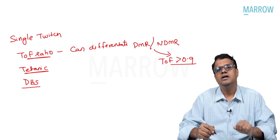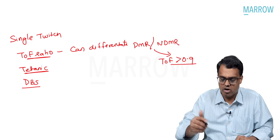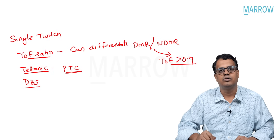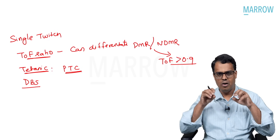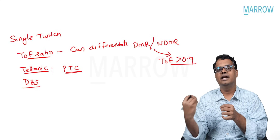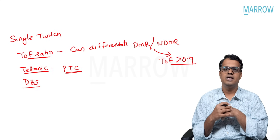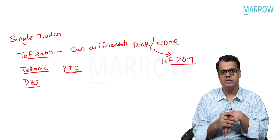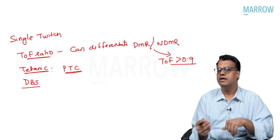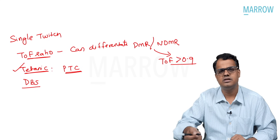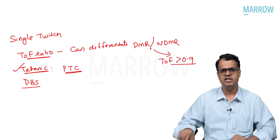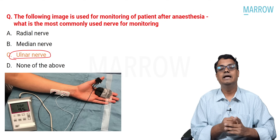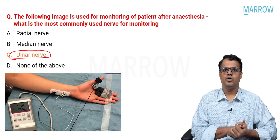Tetanic stimulus is a painful stimulus used to identify whether the patient is in deeper planes of anesthesia by counting post-tetanic counts (PTC). On repeated application, the muscle contracts repeatedly; in deeper planes, the post-tetanic count will be zero. Double burst stimulation is similar to tetanic stimulus but is not as painful. We discussed neuromuscular monitoring in detail in the neuromuscular monitoring chapter — please have a look.